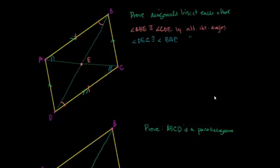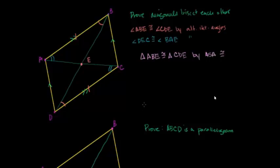We know that this triangle is congruent to that triangle by angle-side-angle. If two triangles are congruent, all corresponding sides are congruent. So side AE corresponds to side CE — AE must be equal to CE.